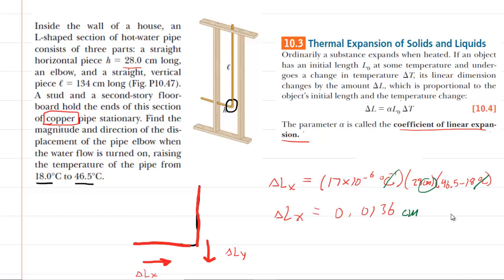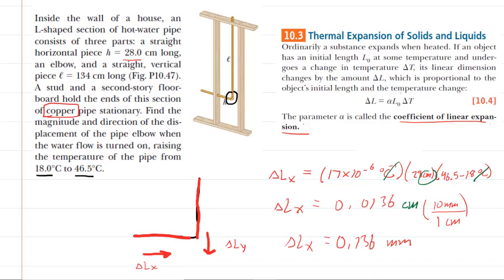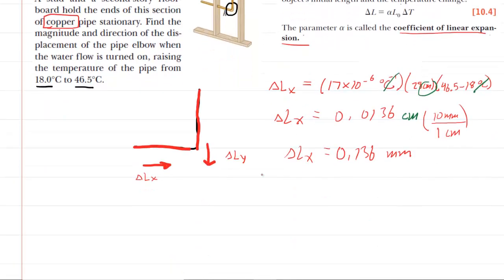Now your homework system might want your answer expressed in millimeters. And so we'll make a little conversion here just in case that that is true. And we all know perhaps that one centimeter is equivalent to 10 millimeters. So we're basically just going to multiply our answer by 10. And when we do that, we get 0.136. And this will now be millimeters. So that is the change in length for that horizontal section of the elbow.